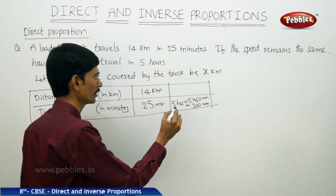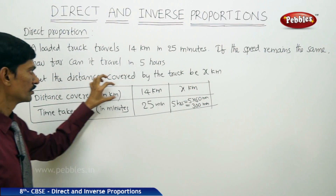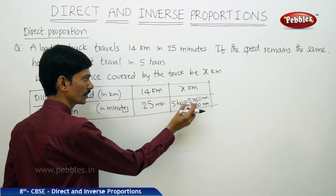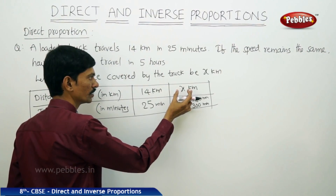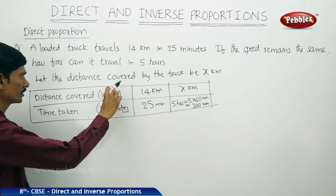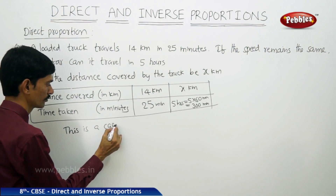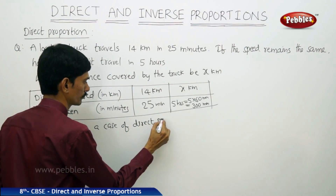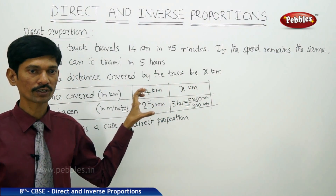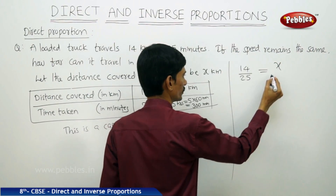We need to find the distance traveled, which we take as x kilometers. If it is taking 25 minutes it is traveling 14 kilometers, so if it is taking 300 minutes — more time — then it will travel more kilometers when maintaining the same speed. This is a case of direct proportion; the distance covered is directly proportional to the time taken. So we can write 14 by 25 equals x by 300.